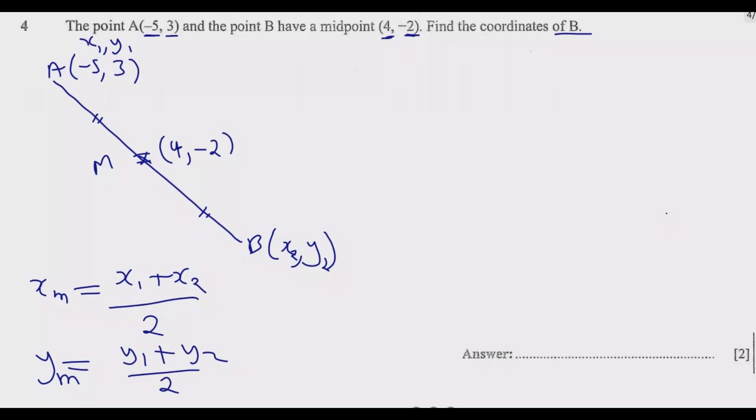So let's find the value of X first. You know the value of the midpoint X_M is 4, so 4 is equal to X₁ is negative 5, so negative 5 plus X₂ is what we're looking for at B, which is X₂, then divide by 2.